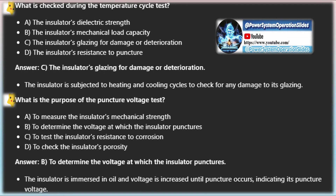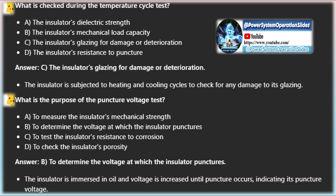Electromechanical test: this test is specific to suspension-type insulators. A tensile stress of 250% of the maximum working tensile stress is applied, followed by testing the insulator for 75% of its dry spark-over voltage.